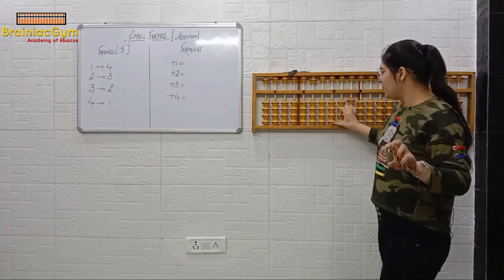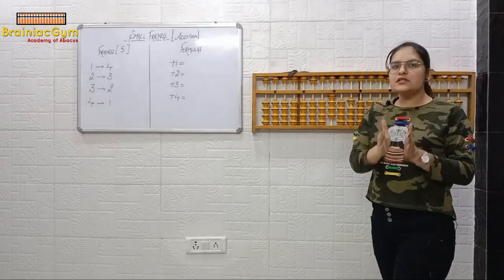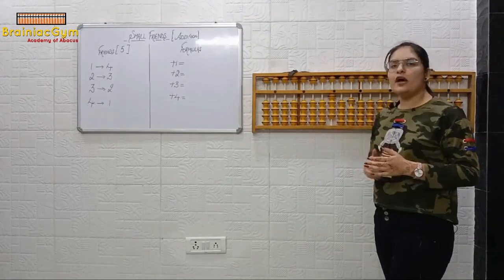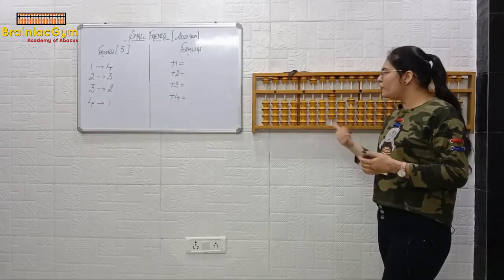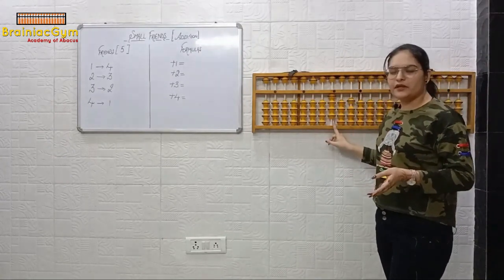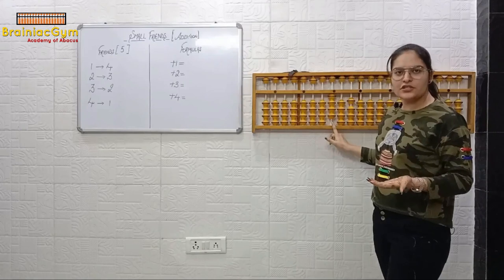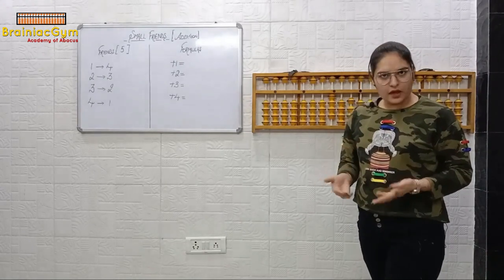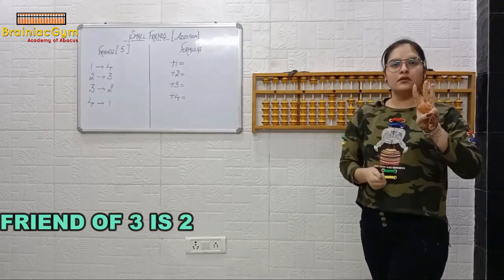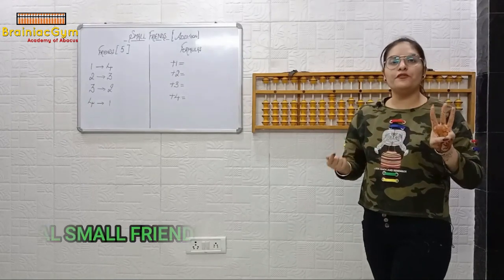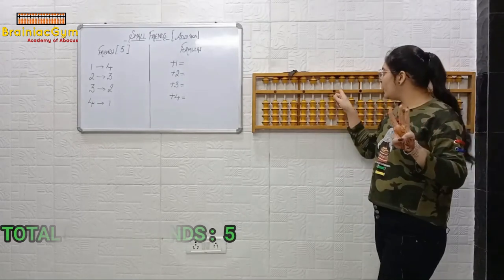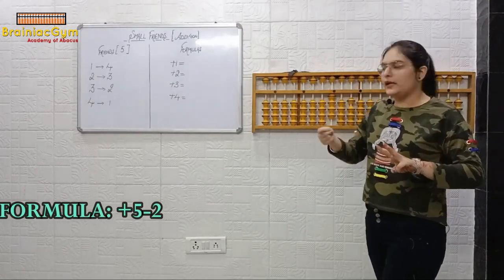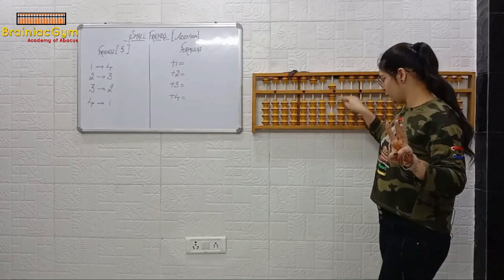Let's take one another example. Place four on your abacus again and do the sum along with me — this will help clear your concept easily. Now we have to do plus three. We can't use the direct method, so we'll use small friends. Friend of three is two, and total small friends is five, so formula will be plus five minus two. Answer is seven.